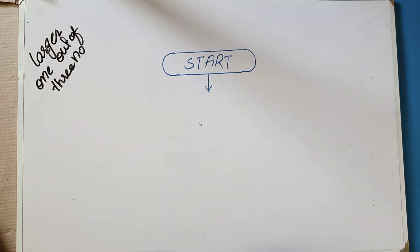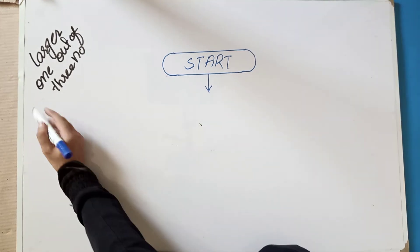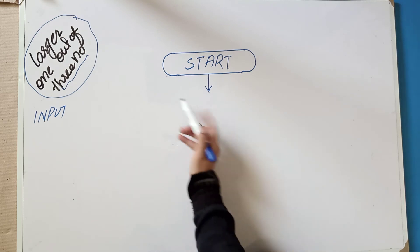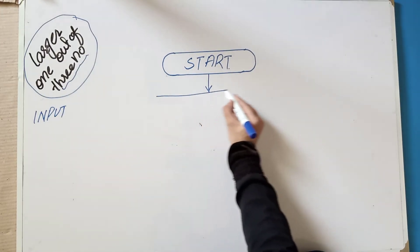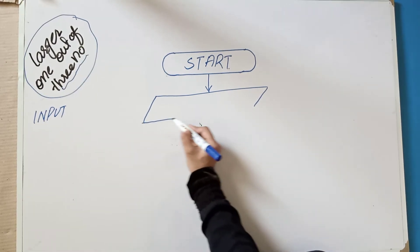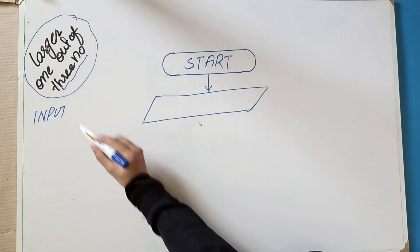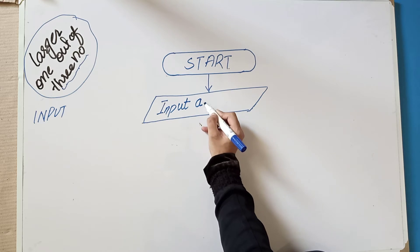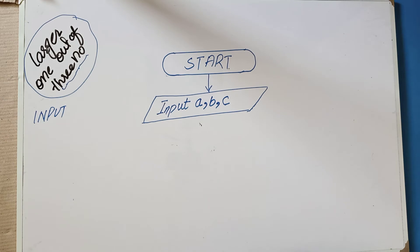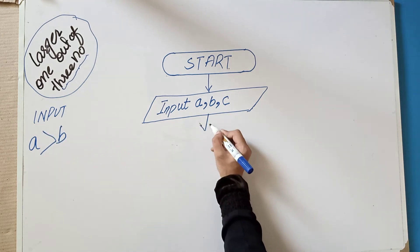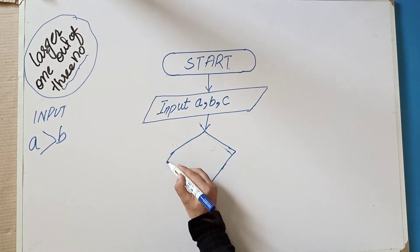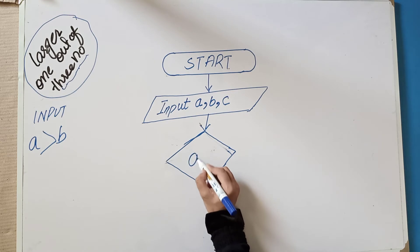In the process we are performing a decision, so we use the decision box. For input, my input is three numbers. For input we use the parallelogram box. So I will draw the parallelogram here — write 'Input A, B, C'. Then in the process we apply the first condition: A is greater than B. We draw a decision box and write the condition A > B.